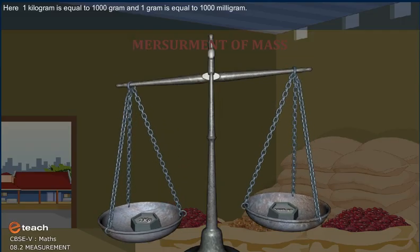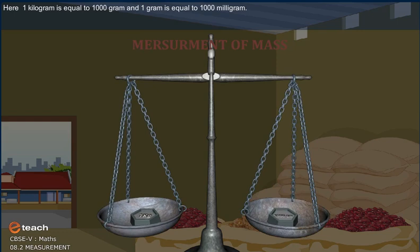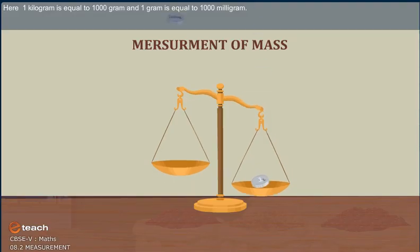Here, 1 kg is equal to 1000 g and 1 g is equal to 1000 mg.